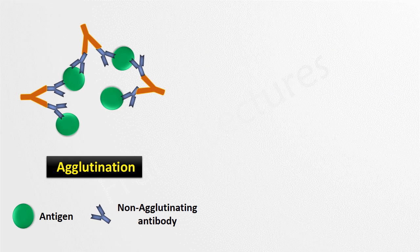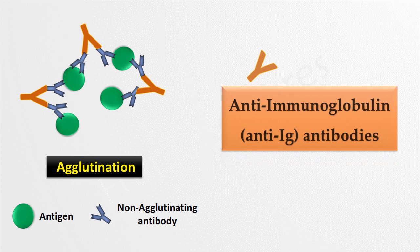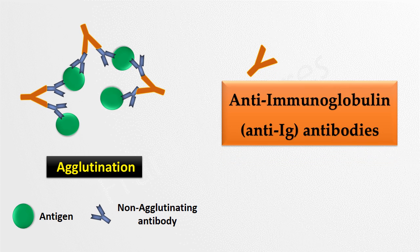So the second antibody is targeted against the first one, that is, the non-agglutinating antibody. These antibodies are known as anti-immunoglobulin antibodies, abbreviated as anti-Ig antibodies. This is because these are antibodies against antibodies.